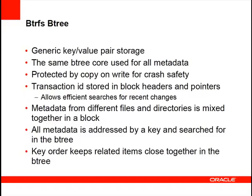The BtrFS B-tree is the core of everything the file system does — a very generic key-value pair storage system. We made a generic data structure to index all file system metadata, then add different ways of using it for different metadata types. The copy-on-write system used for crash safety means we never overwrite existing blocks — we always write to a new location — so we recover quickly after a crash. Unlike ext3/ext4, we don't have a complicated log that needs replaying.